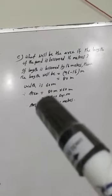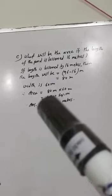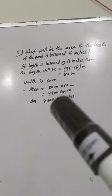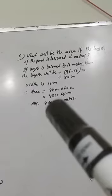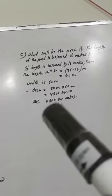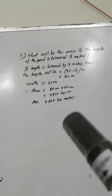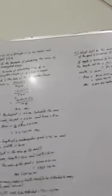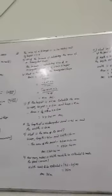Now we have length 80 meters and width 60 meters. 80 multiplied by 60 equals 4800 square meters. Okay, practice this method. Thank you.